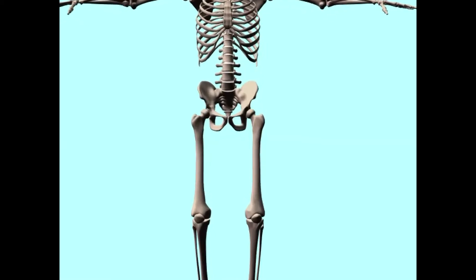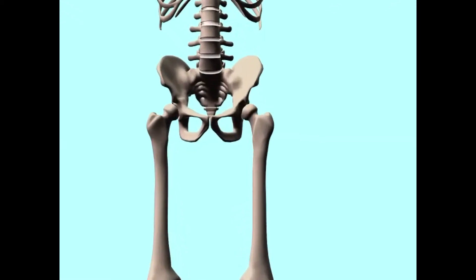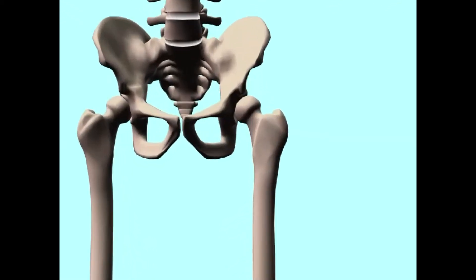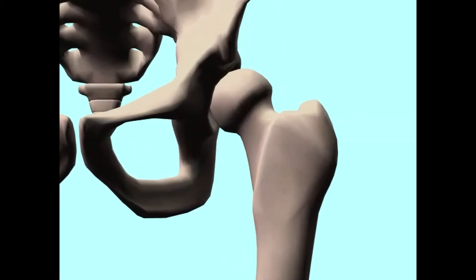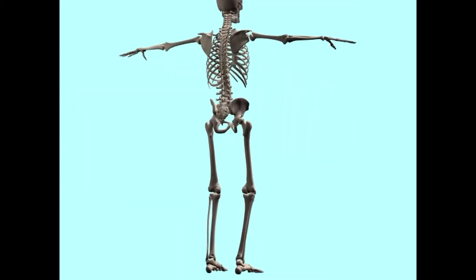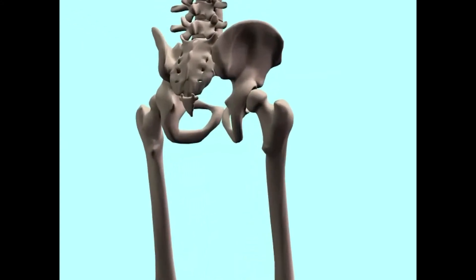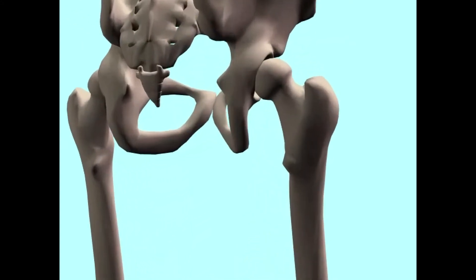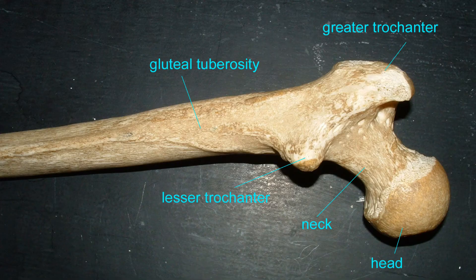At the proximal end of the femur, the body's largest and heaviest bone, there is a round head, which narrows to form the neck, which is then followed by two knobs: the greater trochanter and the lesser trochanter.